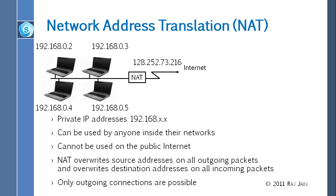Any organization can use private addresses without asking anybody — you don't have to go to IANA and request an address. You can use 192.168 in your home, and all of you are using 192.168 in your home. That is a private address. The only restriction on a private address is that you cannot use it on the internet.